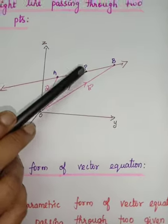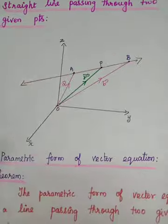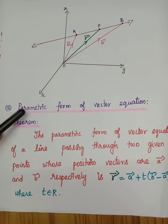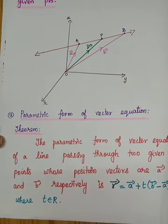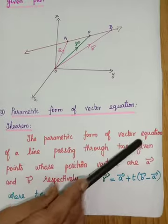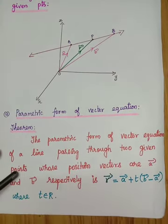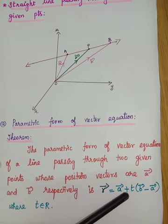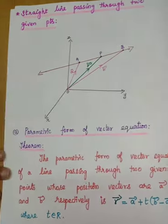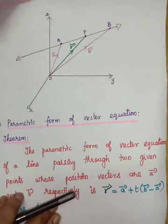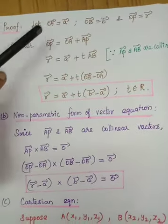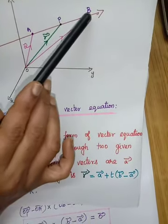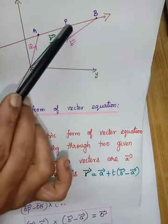We consider an arbitrary point P whose position vector is R vector. The theorem states: the parametric form of the vector equation of the straight line passing through two points whose position vectors are A vector and B vector respectively is R vector = A vector + T(B vector − A vector), where T belongs to R.